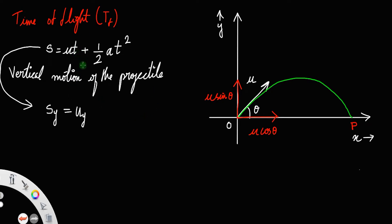You do not have to write t_x or t_y because time has no axis, so simply write t plus half acceleration will be a_y times t squared.